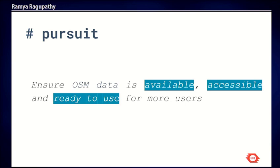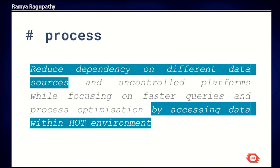With Galaxy, we want to ensure OSM data output is more available, accessible, and in a ready-to-use format for all these different kinds of users. In the context of OSM, data output could mean raw map data or pre-processed information derived from underlying map features. With Galaxy, we want to cover all these data output types and increase the ease of use for all different kinds of users.